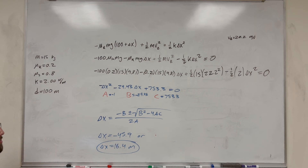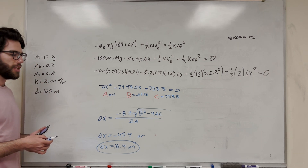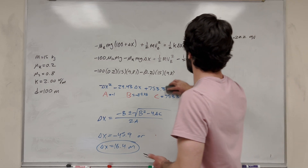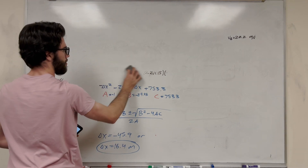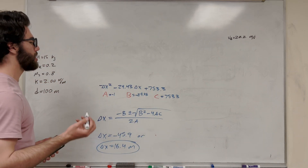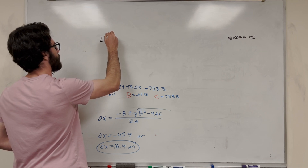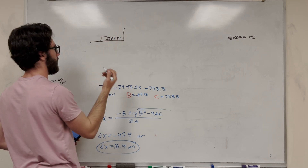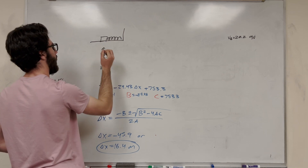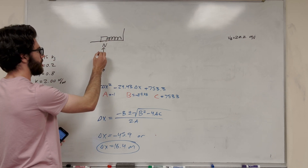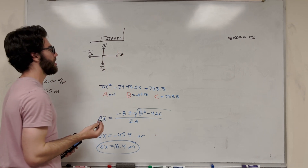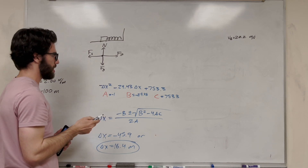For part C, we're finding whether the spring is going to move again once the rock stops. This is no longer a work-energy problem — it's about a block on a spring. Drawing a free-body diagram: we have force of gravity down, normal force up, the spring force pushing left, and friction opposing that motion pushing right. The spring wants to push the rock left, but friction wants to keep it in place.